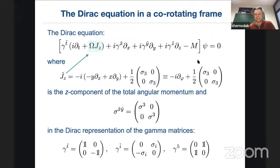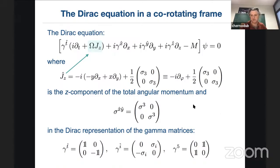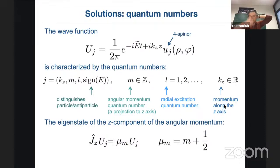Coming to the co-rotating frame, the equation takes an extremely nice form — it becomes like a flat equation where gamma matrices are defined in the co-rotating frame, with only one addition: the time derivative is accompanied by a term corresponding to the total angular momentum of the system. This angular momentum contains the orbital part and the spin part, multiplied by Ω, which plays the role of a chemical potential for rotation. It's just a Hamiltonian shift.